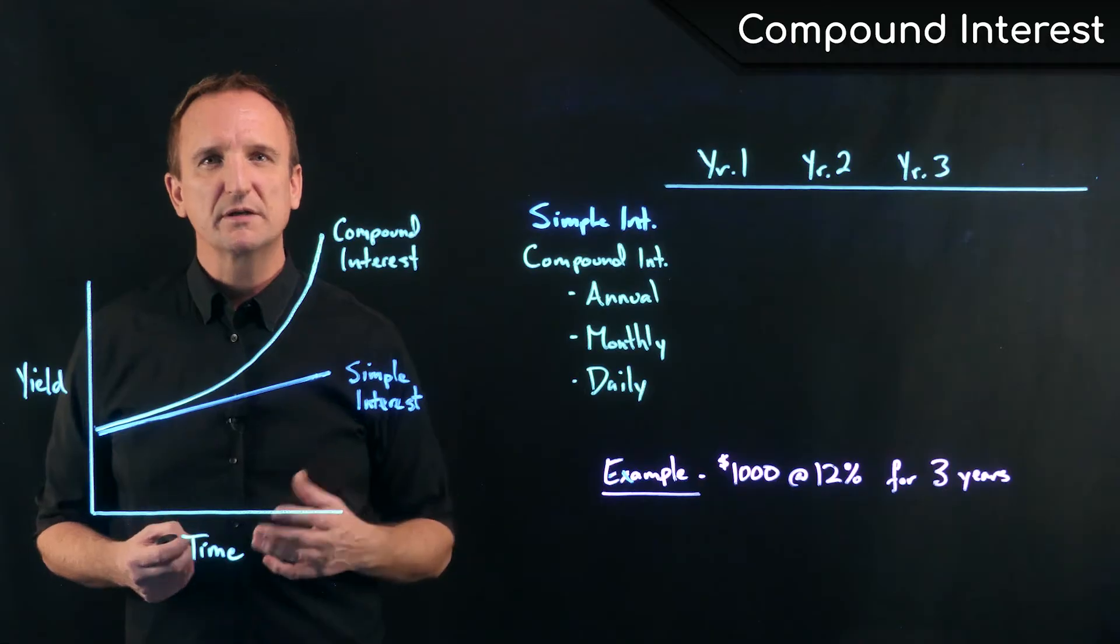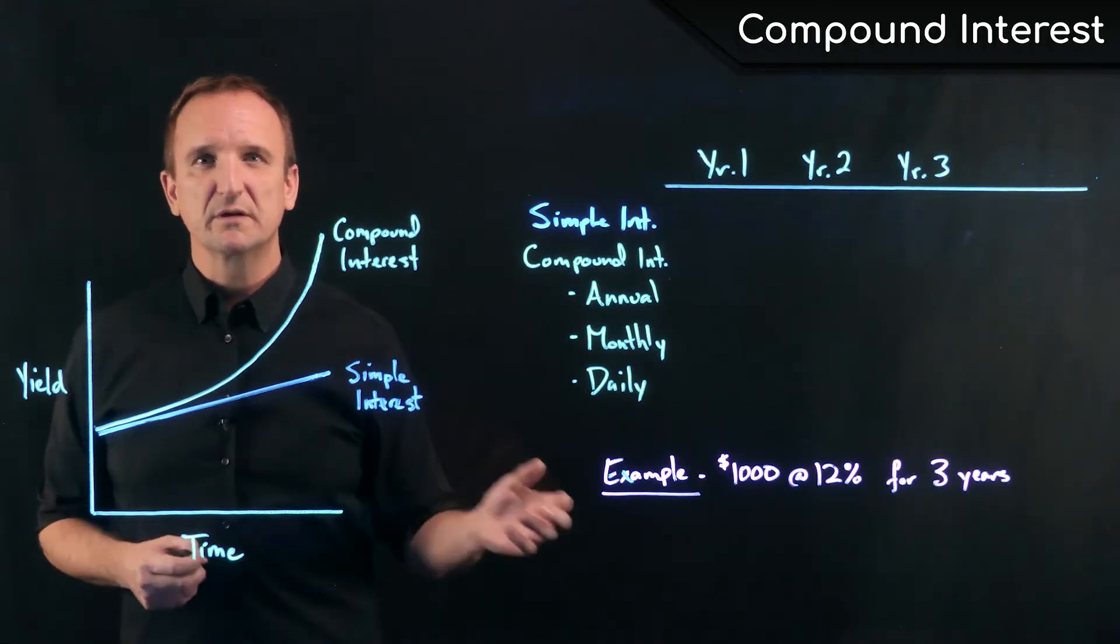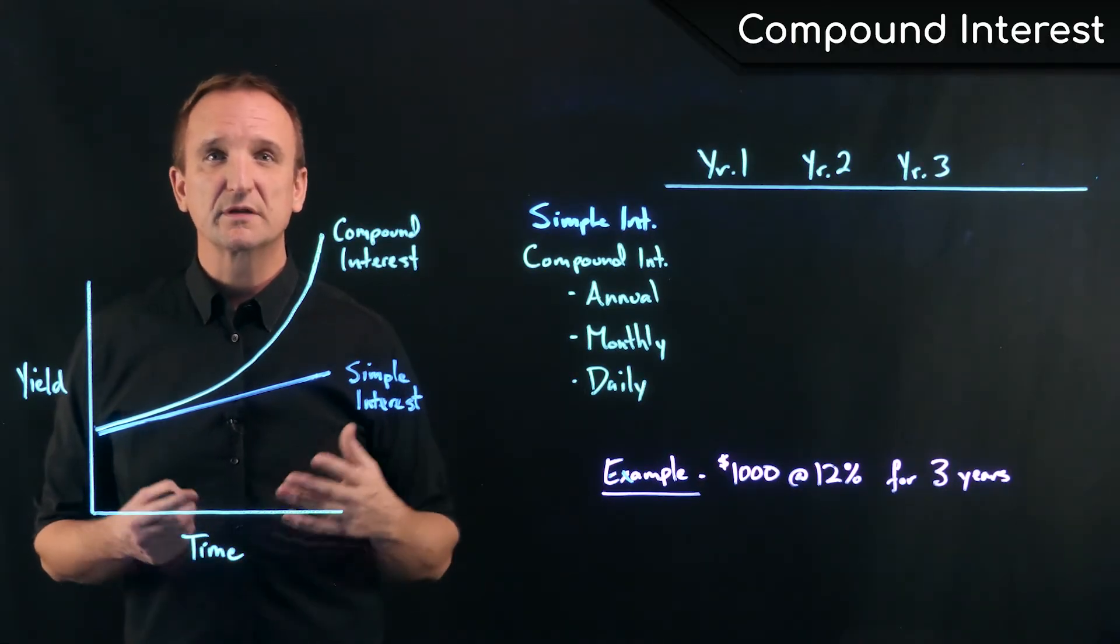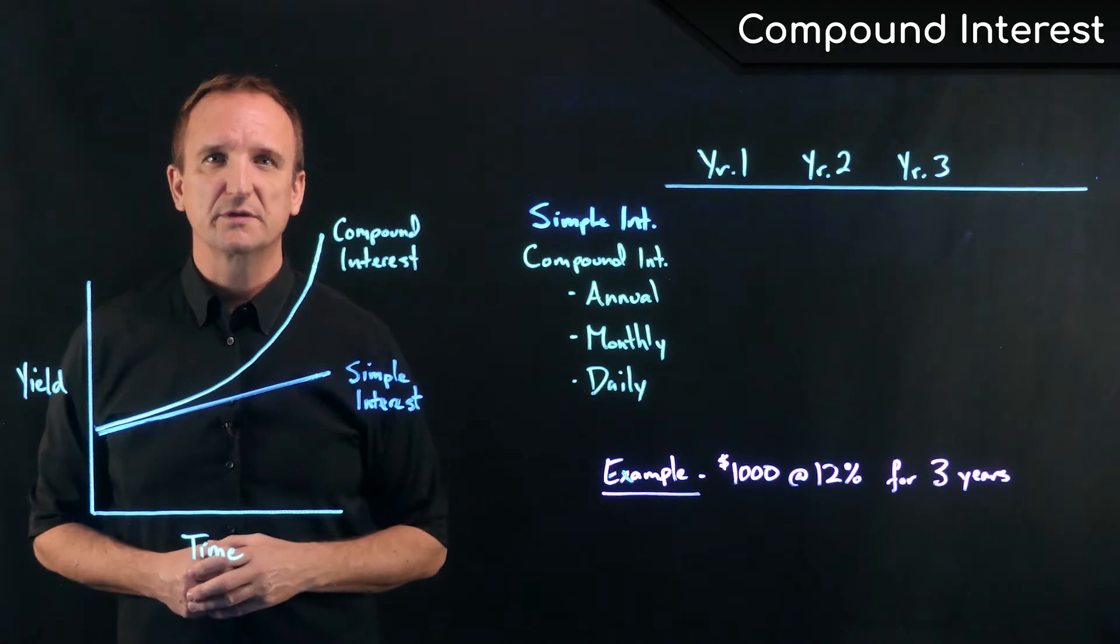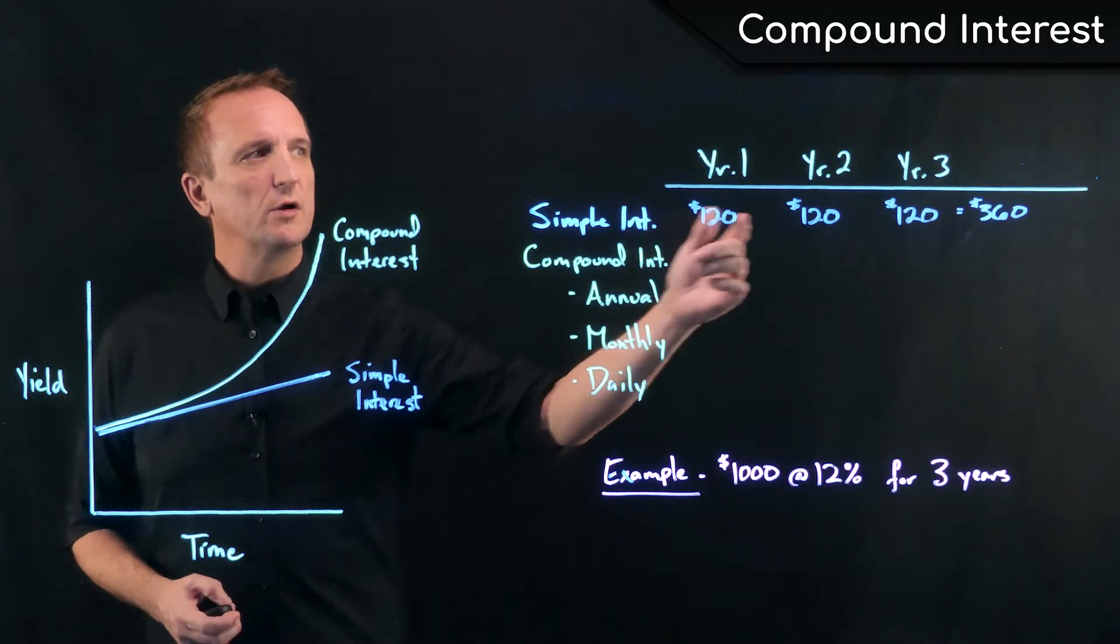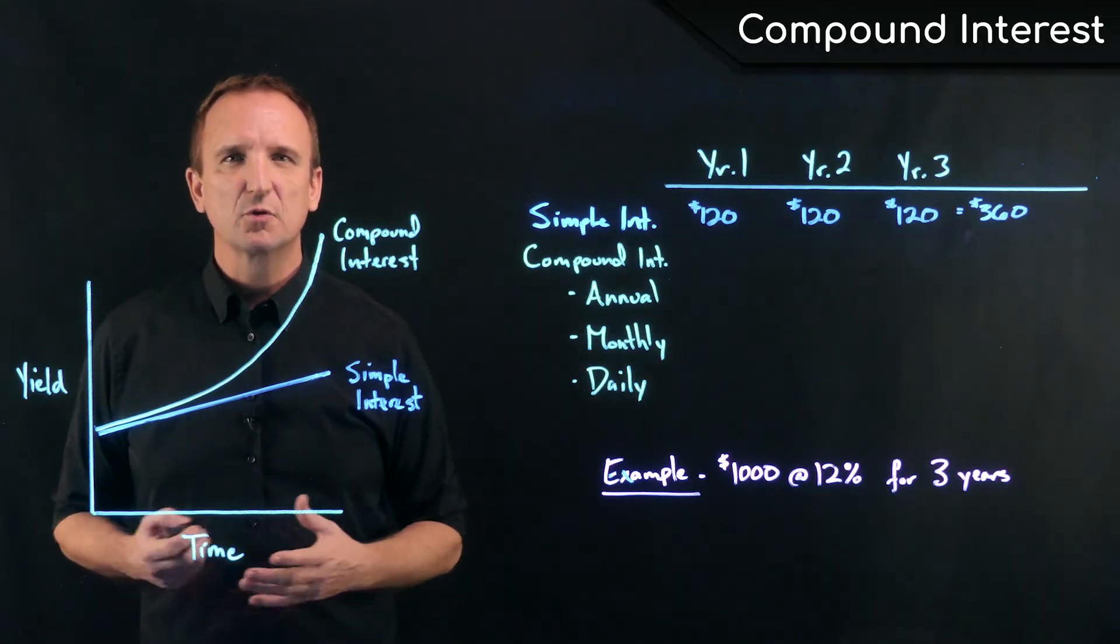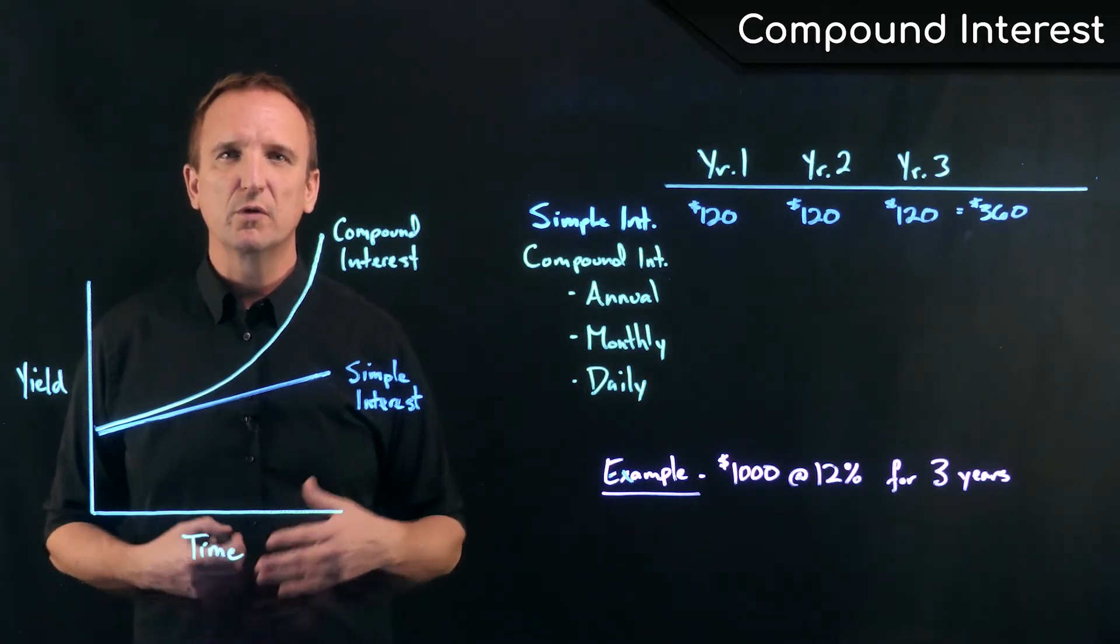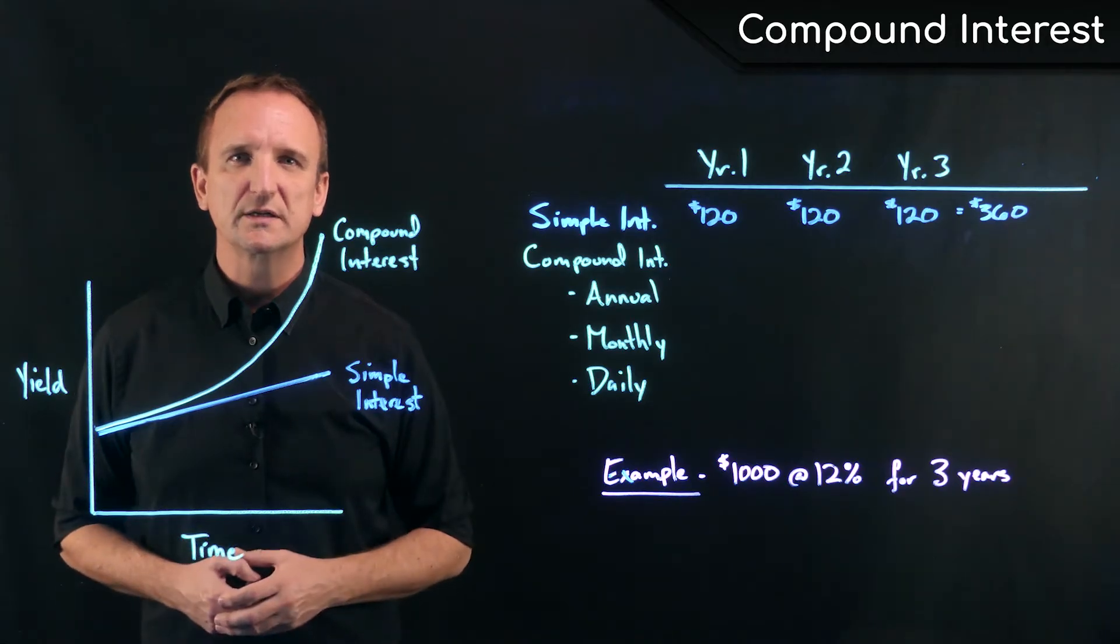I'll show you the comparison between a simple interest investment at 12% versus compound interest at 12%. In the case of simple interest, we would earn on our $1,000 investment $120 each year. So over the three-year life of the investment, we would yield $360 on our original $1,000.